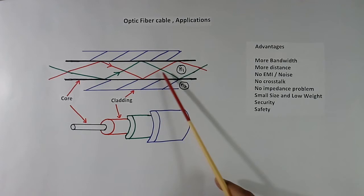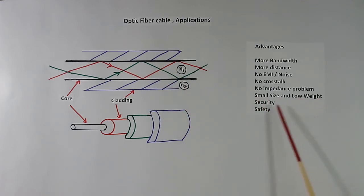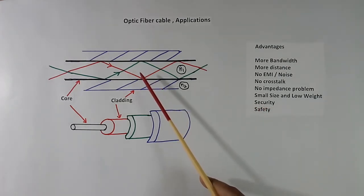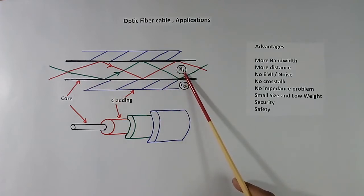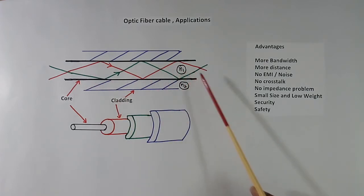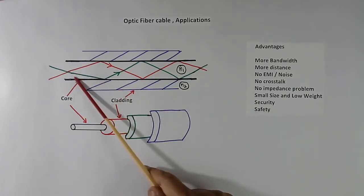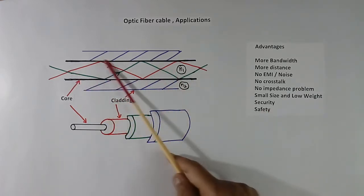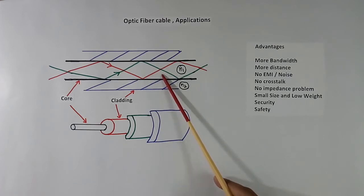Fibre optic cables are small in size and low in weight. Security is greater than copper cable. Then safety — because there is no electrical wire, there is no high voltage, low voltage, or shock problem. It is safe.